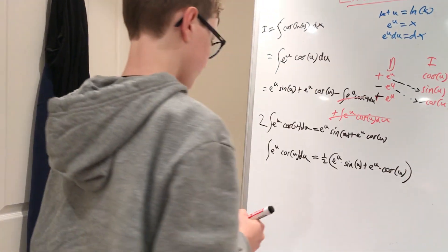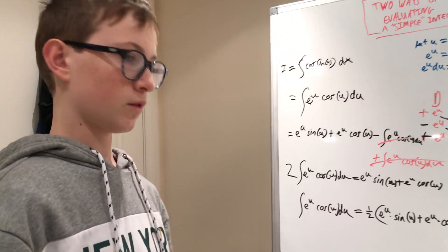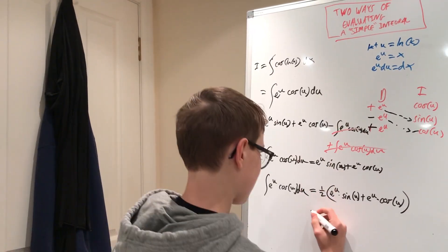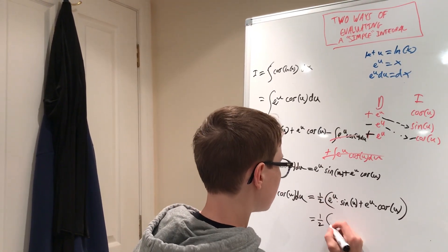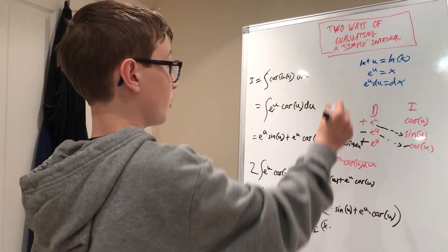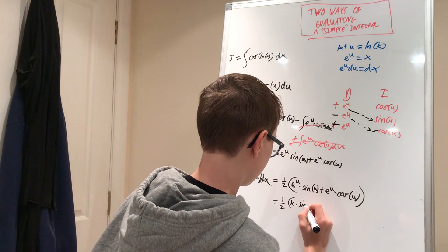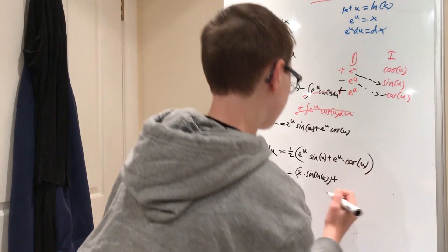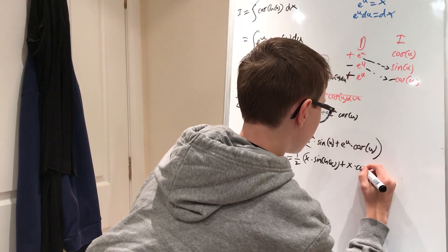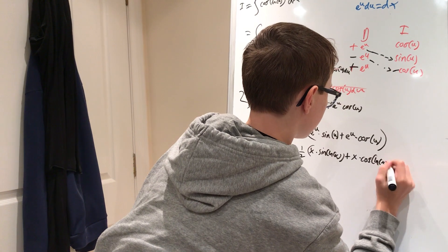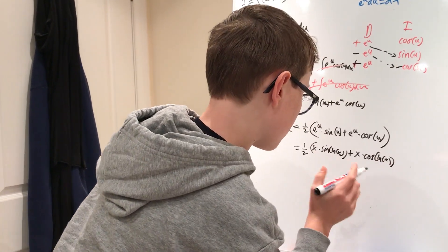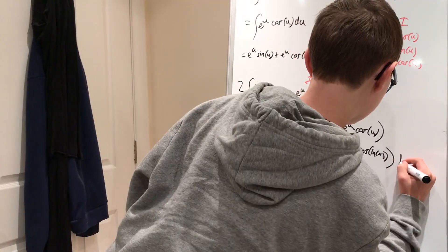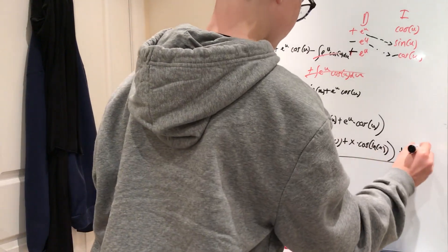The last step is to substitute back in terms of x. Since e to the u is just x, and u is ln x, the answer is one half times x times (sine of ln x plus cosine of ln x), plus C. This is the final answer.